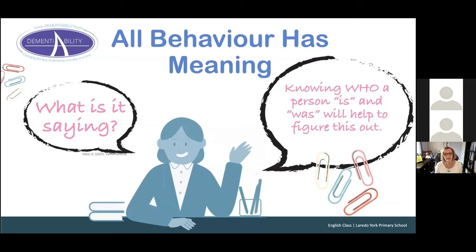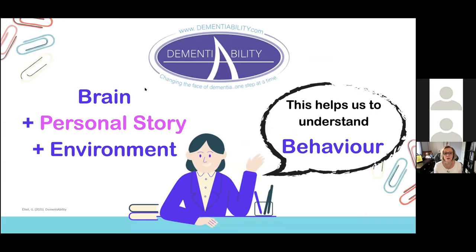Dementiability teaches, as many other programs teach, that all behavior has meaning. These are often called the behavioral and psychological symptoms of dementia — but what we want to focus on is: what is this observation, this behavior, telling us? What is it saying? When we look at who they were and who they are, it helps us figure things out. It's the brain, personal story, and the environment. We have to understand the brain before we go any further.